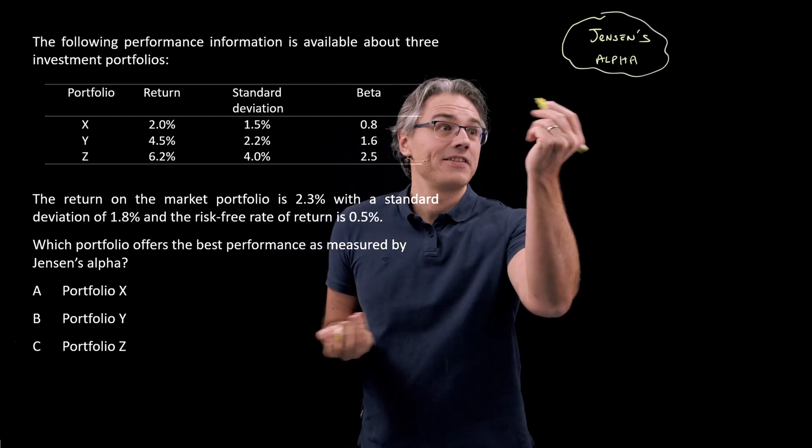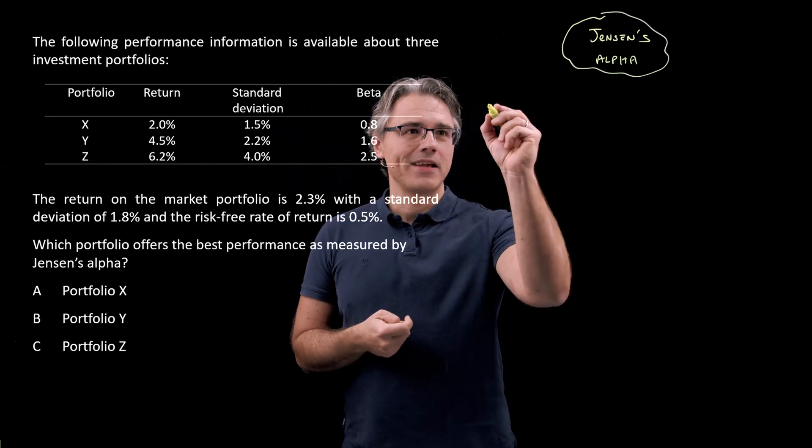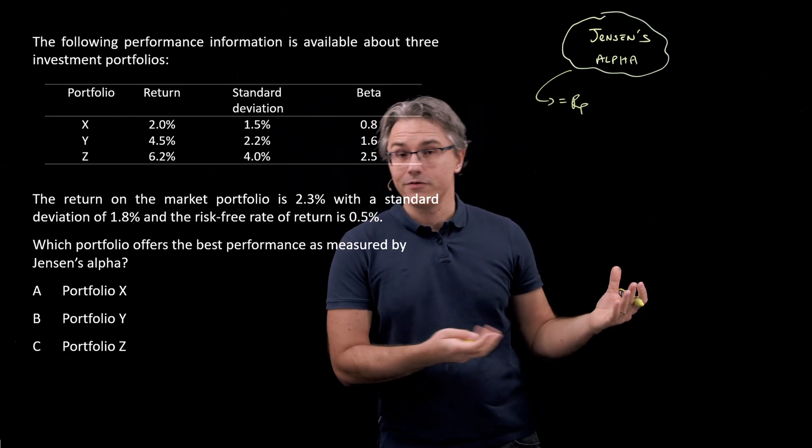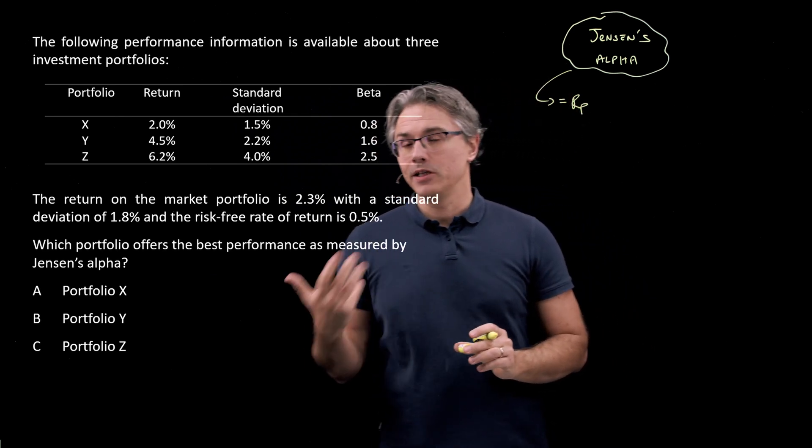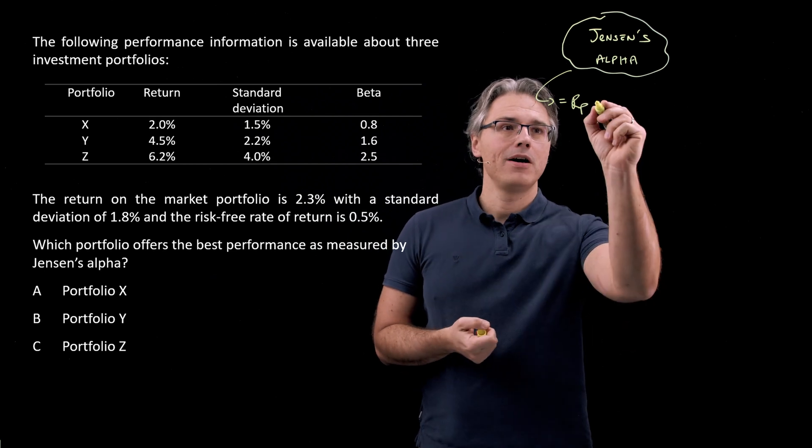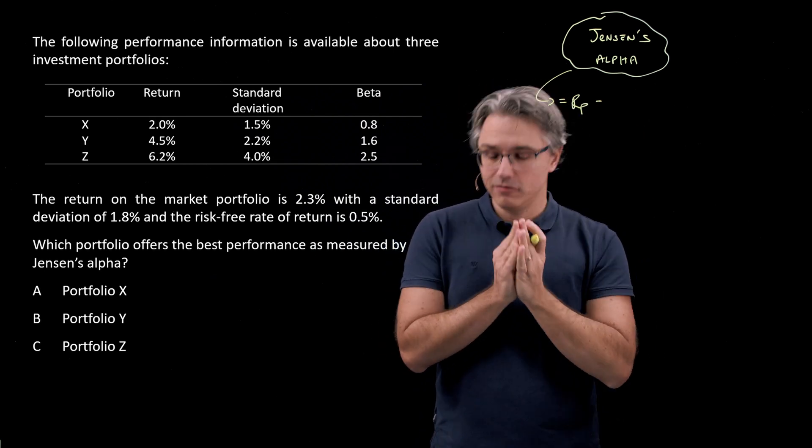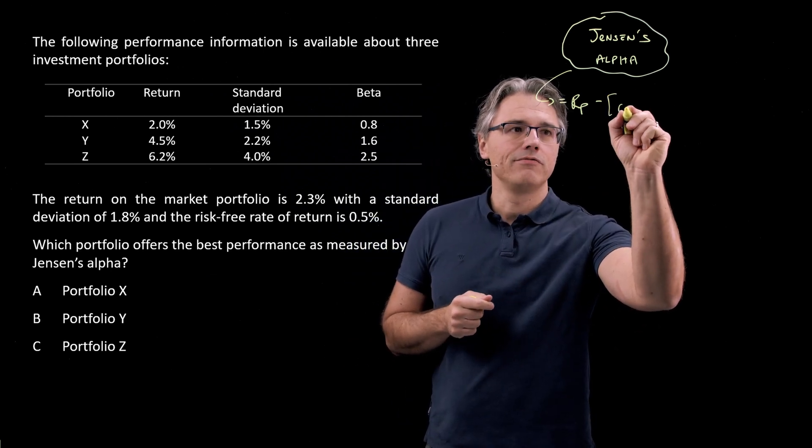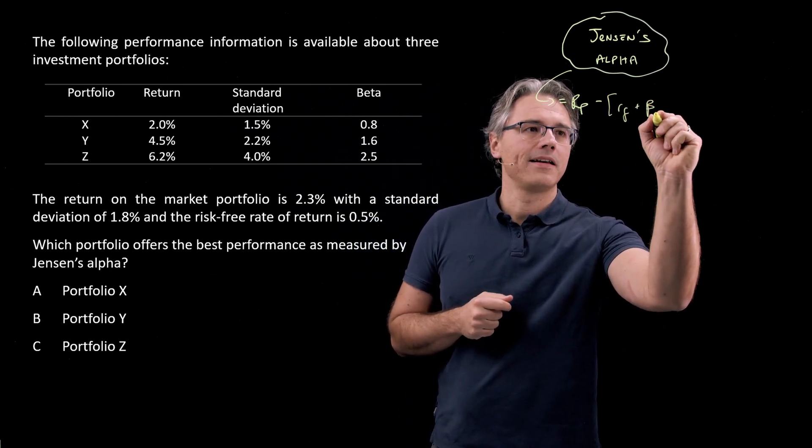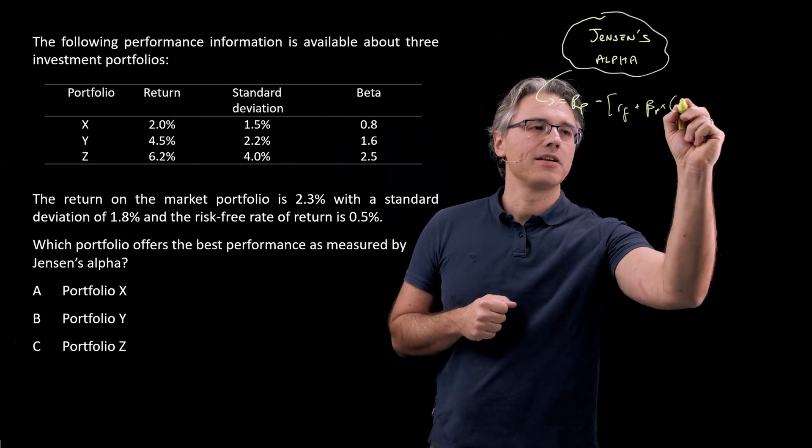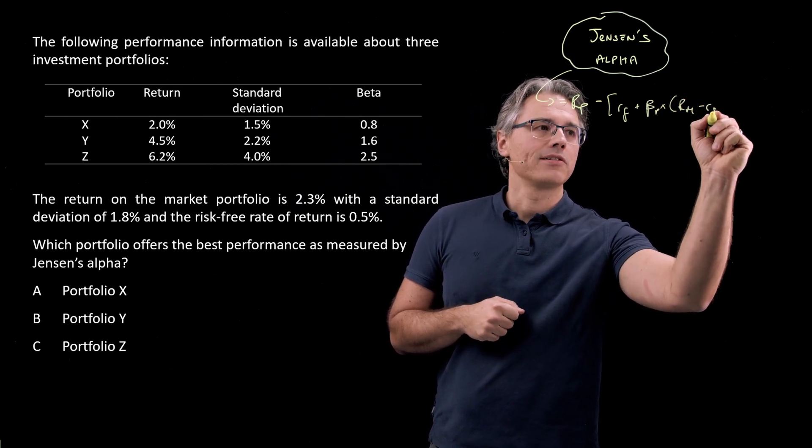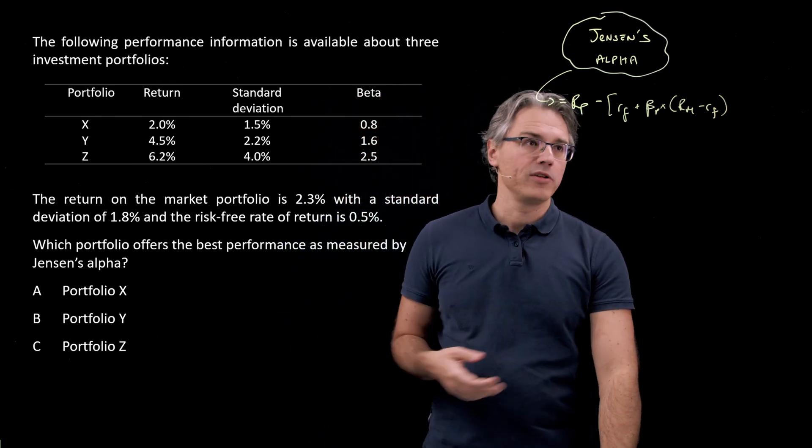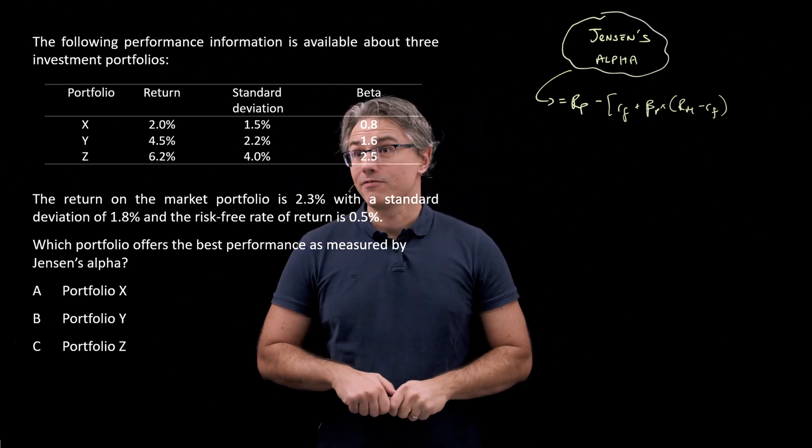So basically, this thing called Alpha, which we also call Jensen's Alpha, is equal to the return on the portfolio, either expected or historically experienced, minus what the CAPM model would predict is the required rate of return. And that's obviously a function of the risk-free rate plus the beta of that specific portfolio times RM minus RF, where RM is the rate of return on the market portfolio, and RF is once again the risk-free rate of return.